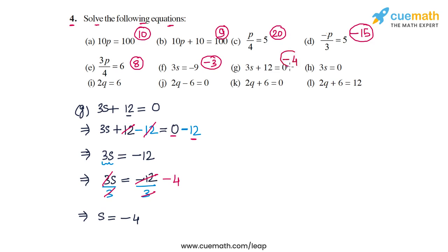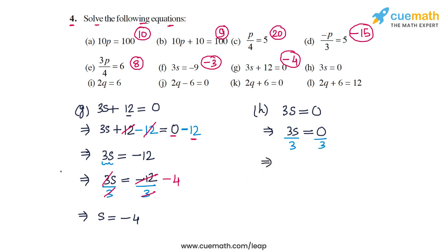In part h the equation is 3s equal to 0. To separate out s we divide by 3 on both sides. The 3s cancel out on the LHS and 0 by 3 is 0, because 0 divided by any non-zero number is 0. So we get s equal to 0, and the solution in part h is s equal to 0.